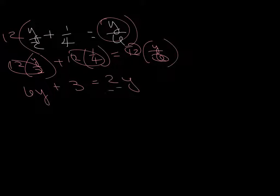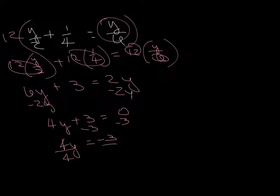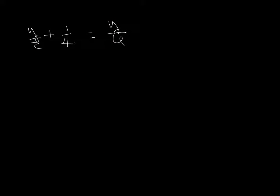Alright, let's move this over. Move this over. Move this over. Divide by 4. And y equals negative 3 fourths. And we're done. Alright, so it's a nice procedure in order to get rid of those blasted fractions.